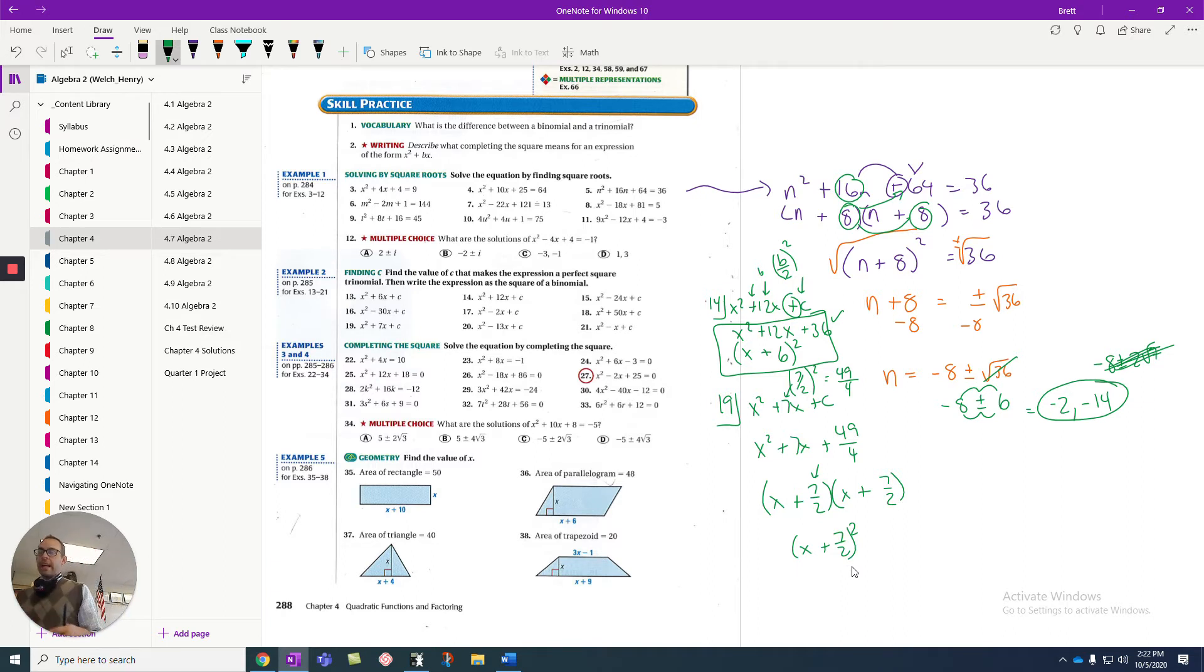Now, at the end of the day, we want to actually be able to solve a problem that starts from scratch and still be able to get through it. So let's take a look at, let's do number 26. This is an example of a problem you'll have on your test, just like this. x squared minus 18x plus 86 equals 0. Step 1, we've got to make room for our perfect number. So we're going to move the 86 out of the way. So now we get x squared minus 18x plus something equals negative 86.